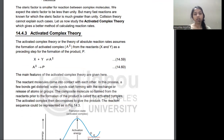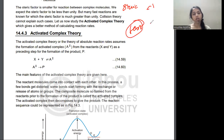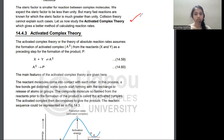The steric factor was less for complex molecules compared to simple molecules. We expected the steric factor to be less than 1, which would mean fast reactions. But in many fast reactions, the steric factor was greater than 1, so we couldn't fully explain it with Collision Theory. That's why the Activated Complex Theory was introduced.